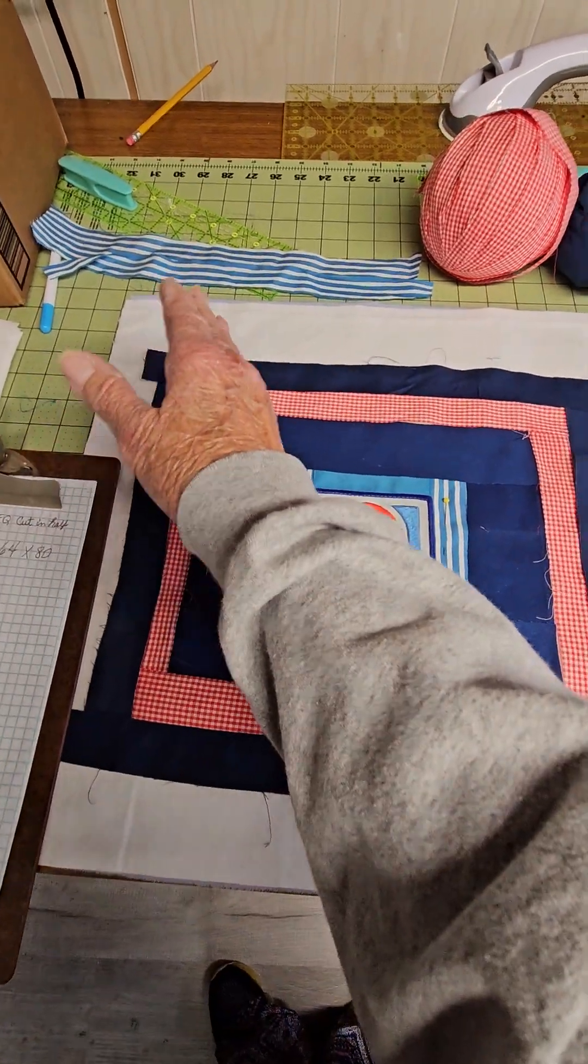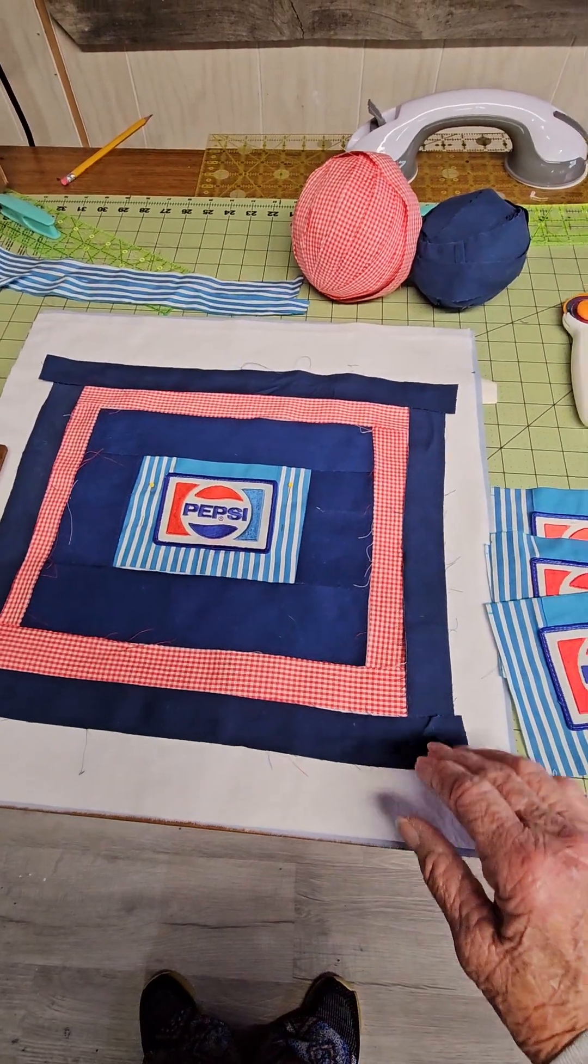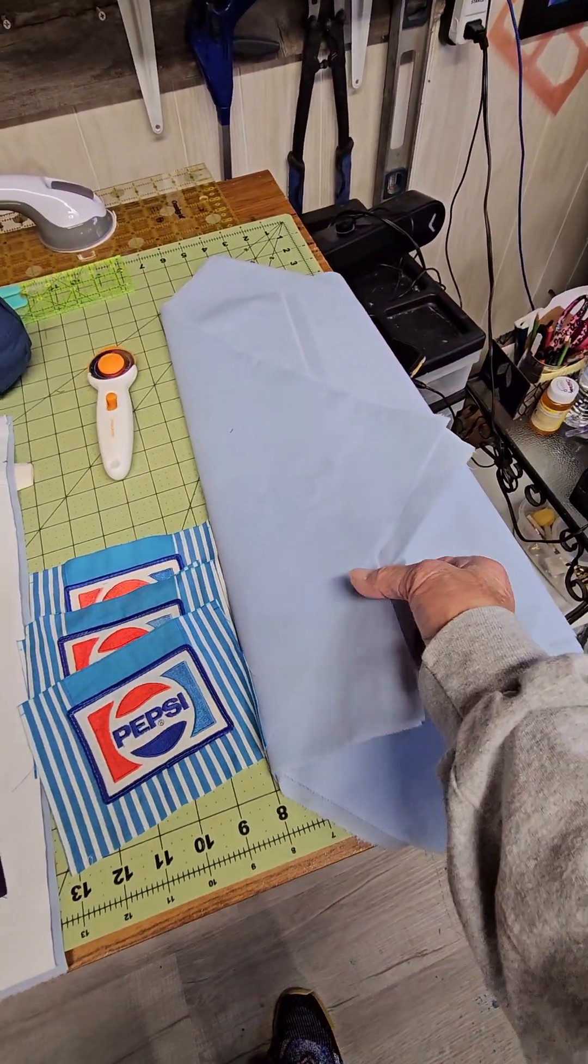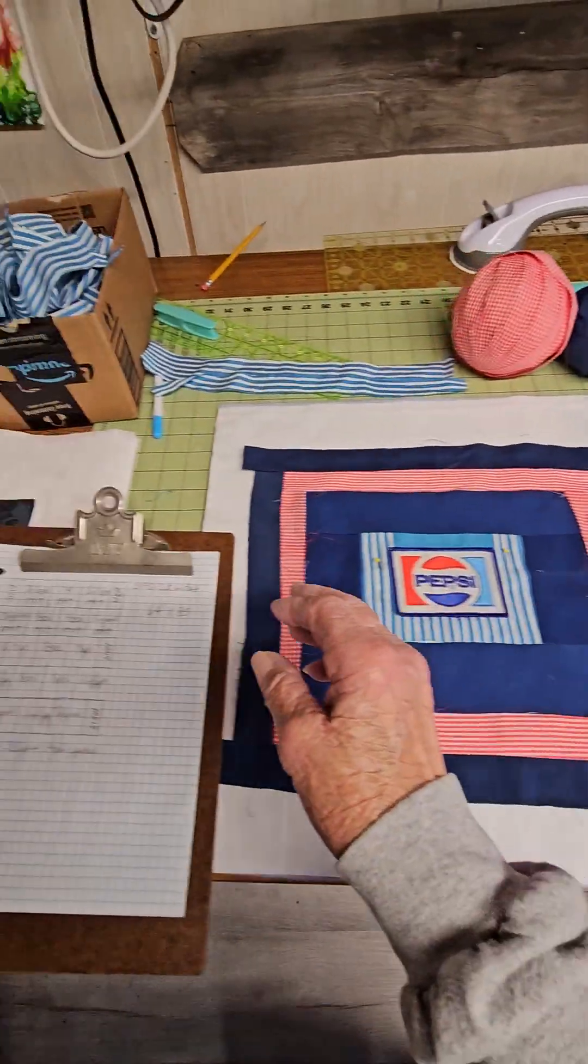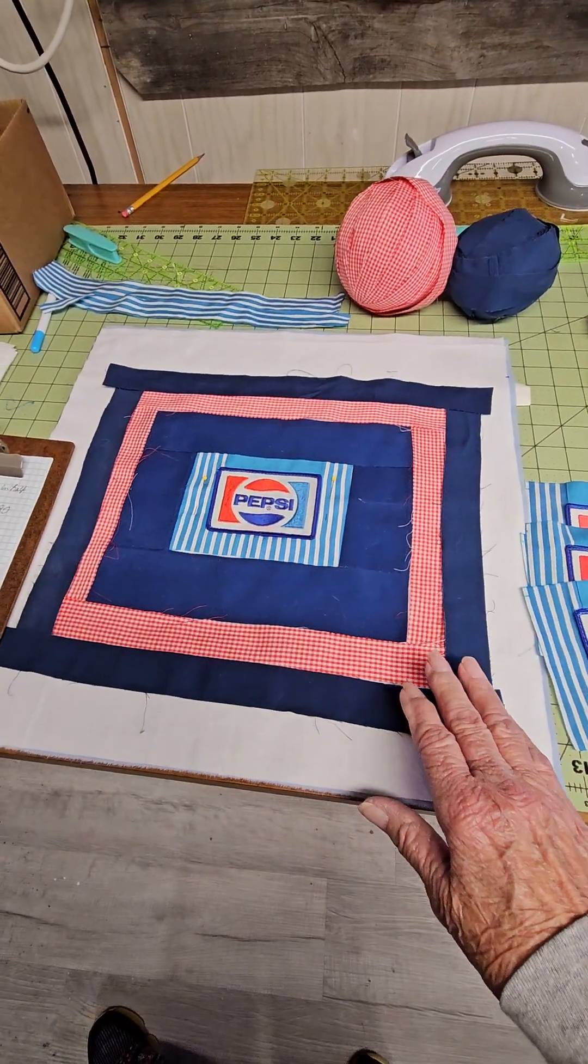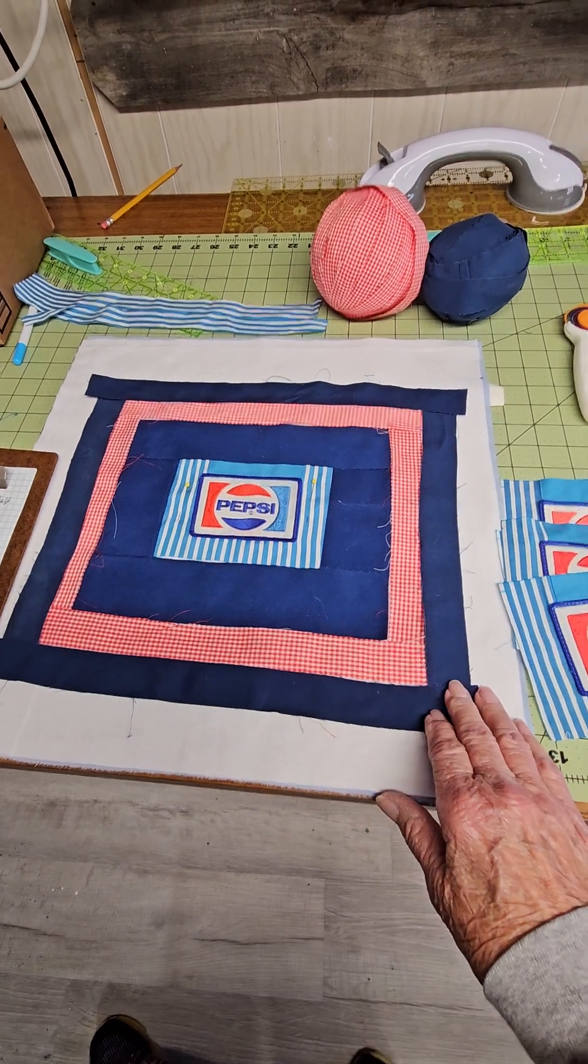My backing and my batting are 17 by 17, hopefully with a finished block 16 by 16. This will be a rag quilt.